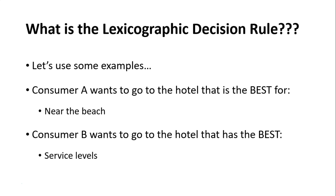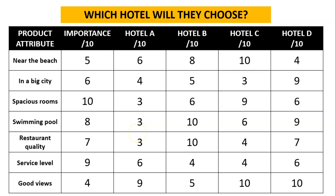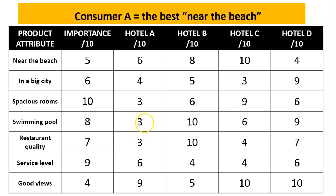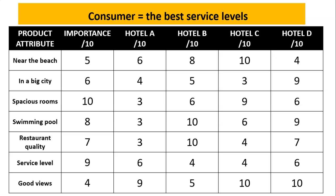We're going to use two examples. Consumer A wants to go to the hotel that is best for being close to the beach — they want to be right near the beach. Consumer B wants to be looked after, so they want the best hotel that has the best service levels. For Consumer A, looking at near the beach, Hotel C scores 10 out of 10 — far superior to the others — so Hotel C is our clear choice.